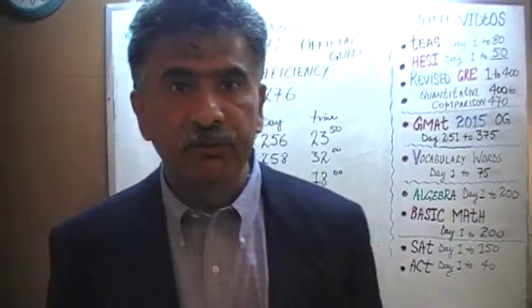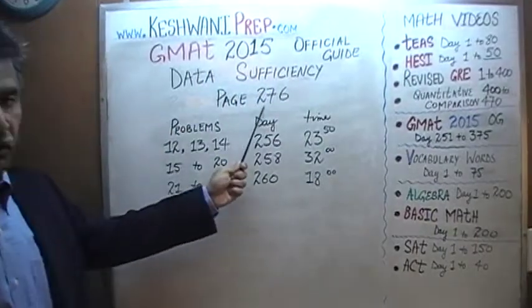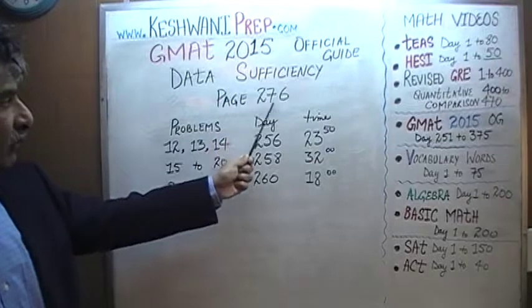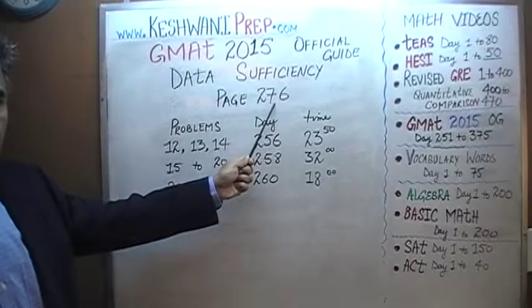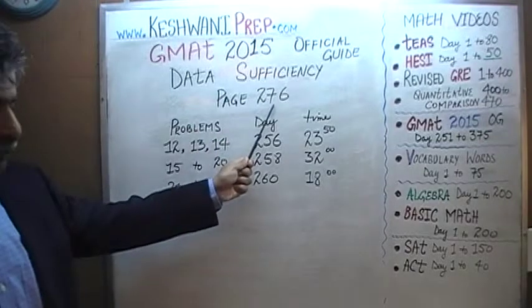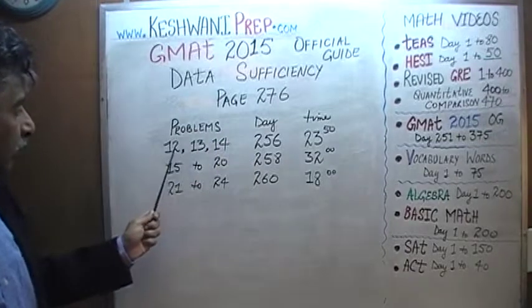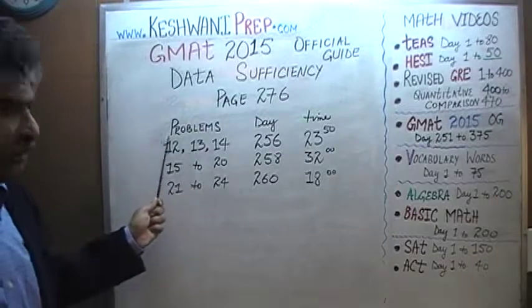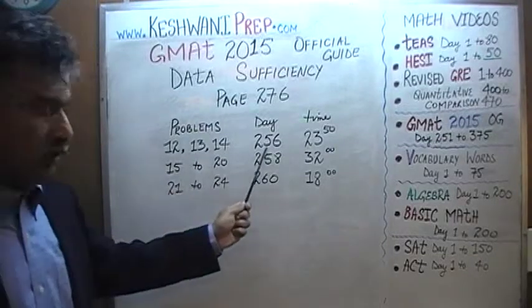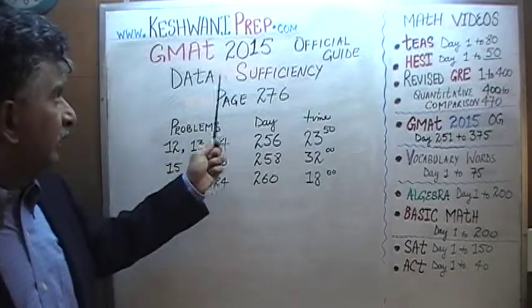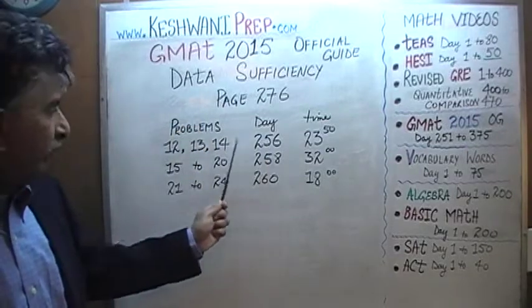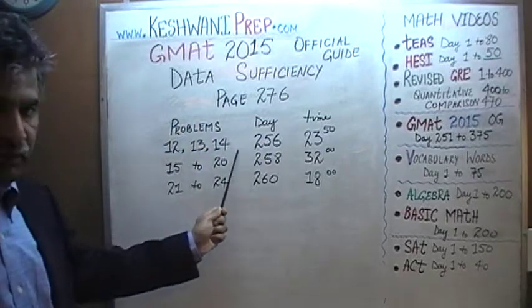Let's take a look at all the data sufficiency problems appearing on page number 276. Problems number 12, 13, and 14 — you will find the solutions to these three problems on Day number 256. Just type in GMAT math Day 256 and you will find the solutions to these three problems.